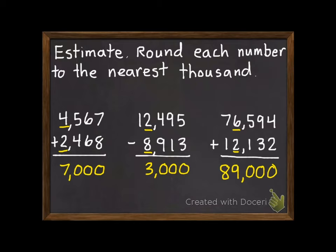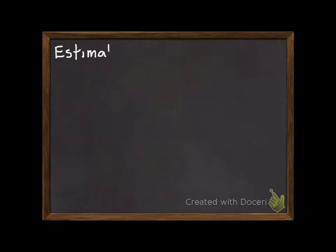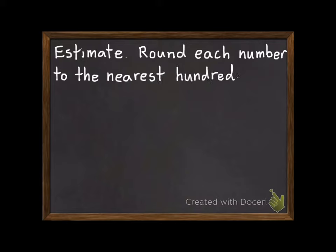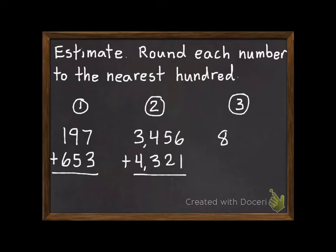And now we're ready for the three problems we'll check in class tomorrow. Same instructions, except we're rounding each number to the nearest hundred this time. And we have three problems again. Number one, 197 plus 653. Number two, 3,456 plus 4,321. And your last problem today is 8,649 subtract 5,718.